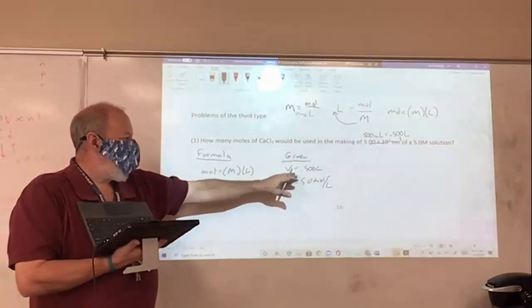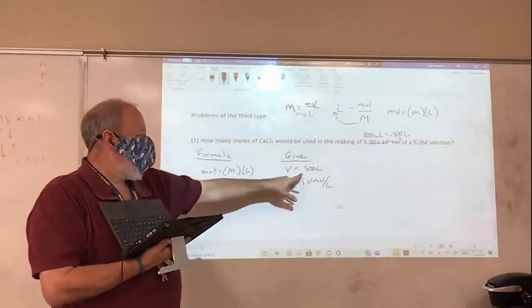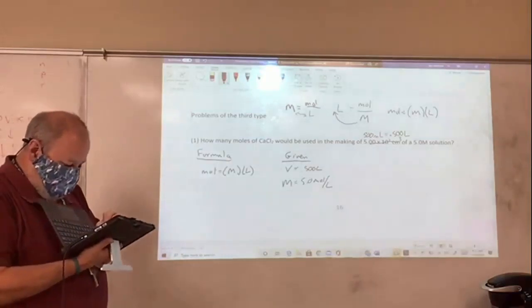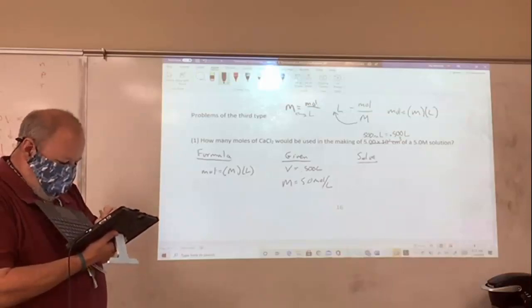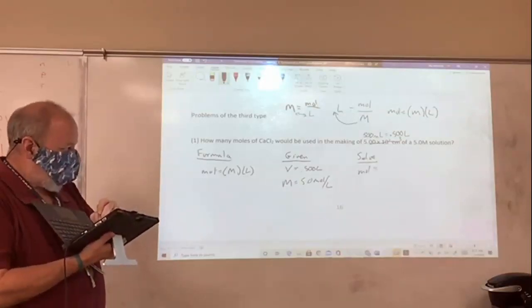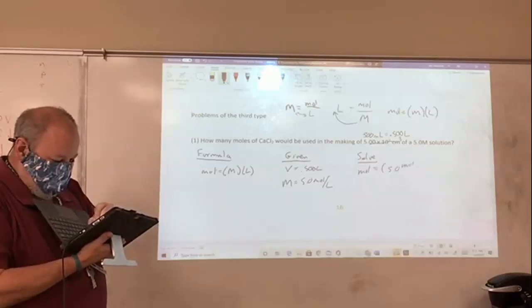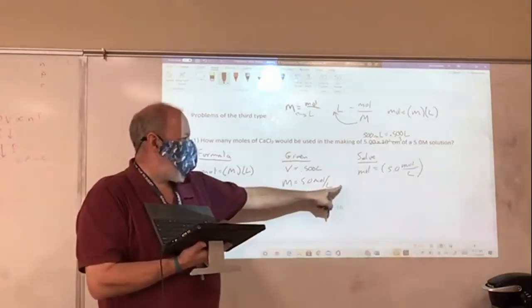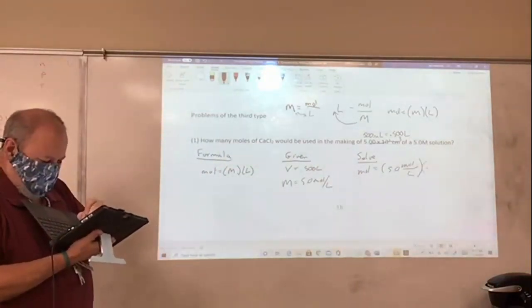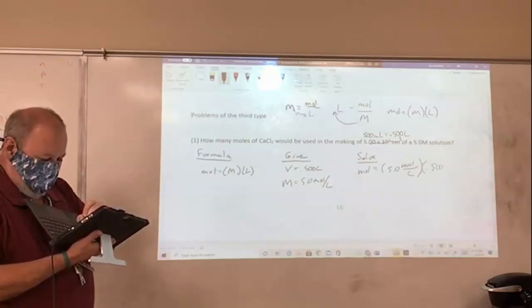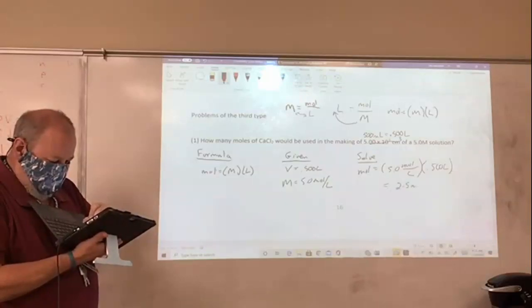Moles equals molarity. Yes, I've got molarity. Do I have liters? Yes, I have liters. So I can solve this. And then I'm going to come over here and say solve. And moles equals 5.0 moles per liter. And remember, I put units in here when I talk about molarity. I put units in when I'm talking about everything, times 0.500 liters. And this is going to give me 2.5 moles.